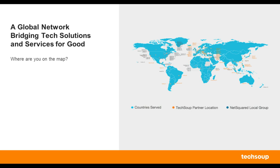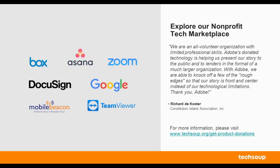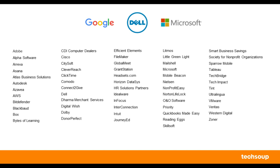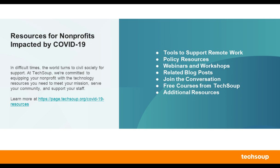With that covered, a little bit about TechSoup. It'd be great to know how many of you have heard of TechSoup before. For those of you who are new to TechSoup, we are a global network bridging tech solutions and services for good. More than 1.2 million nonprofits in 236 countries and territories have benefited from TechSoup. This is made possible by over 100 corporate donors and providers of software, hardware, and services. You can check out all these great offerings by visiting our nonprofit tech marketplace at TechSoup.org/get-product-donations.